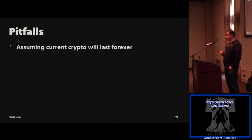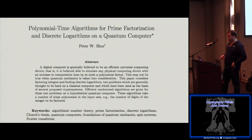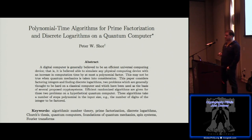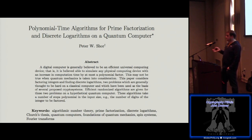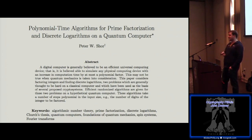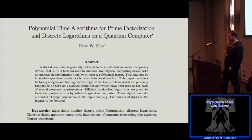The pitfall here is assuming current crypto will last forever. The reason we can't is because of a paper published in 1997 by Peter Shor — this is what gives practical cryptographers nightmares: 'Polynomial-Time Algorithms for Prime Factorization and Discrete Logarithms on a Quantum Computer.' If you've studied cryptography, you might think: prime factorization — that's RSA; discrete logarithms — that's basically everything else: ECDH, Diffie-Hellman — all the public key encryption systems we use are theoretically breakable in polynomial time on a quantum computer of sufficient size.